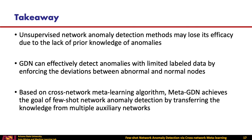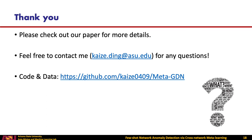At the end, I would like to highlight some takeaways from this work. First, unsupervised anomaly detection methods may lose their efficacy due to the lack of prior knowledge of anomalies. At the same time, GDN can effectively detect anomalies with limited label data by enforcing the deviations between abnormal and normal nodes. Also, based on the cross-network meta-learning algorithm, meta-GDN achieved the goal of few-shot network anomaly detection on the target network by transferring the knowledge from multiple auxiliary networks. If you are interested in our work, please check out our paper for more details, and feel free to contact me. Thank you.